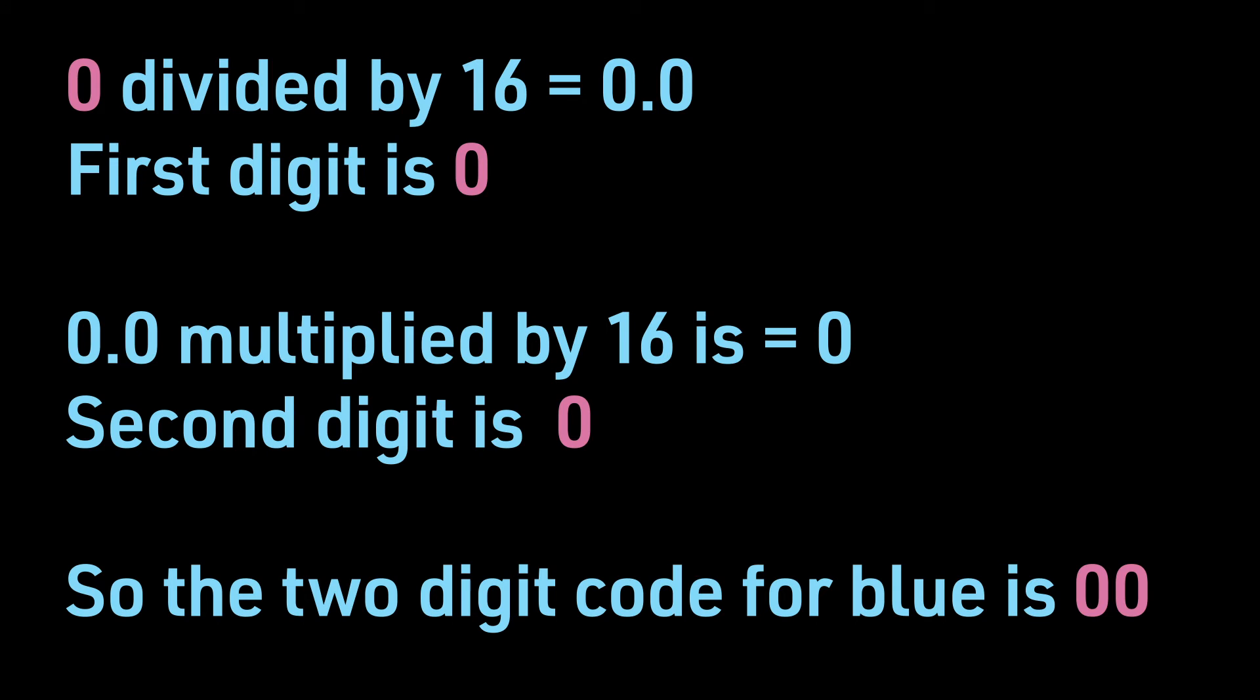The blue color, represented by 0, would mean if we take 0 and divide it by 16, we get 0.0. The first digit is 0. And then 0 multiplied by 16 is also 0. So the second digit is 0.